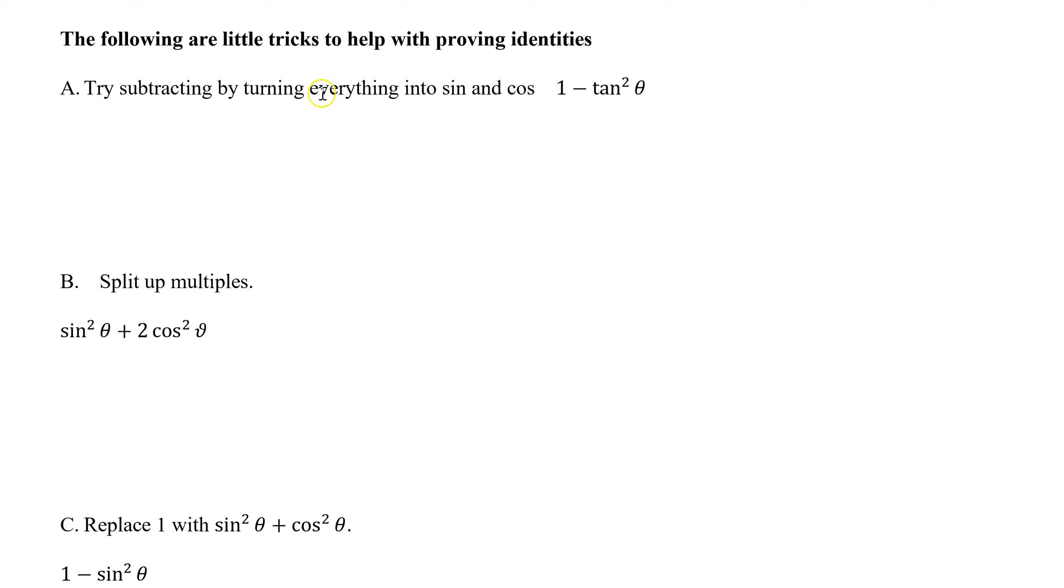We're going to try subtracting by turning everything into sine and cosine. When you have secant, cosecant, tangent, cotangent, these are quotient reciprocal identities. What they do is they create fractions. If we take that tangent squared theta and replace the tangent with its identity of sine theta over cosine theta, what we're doing is actually creating a fraction.